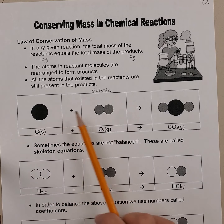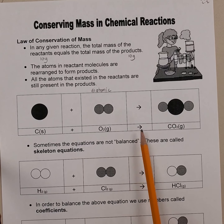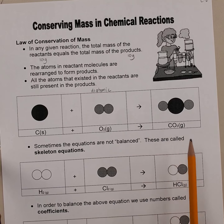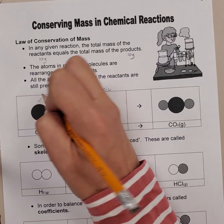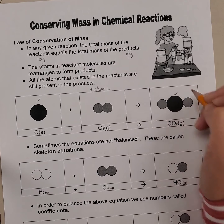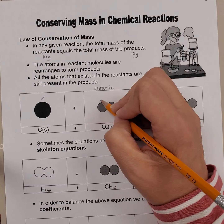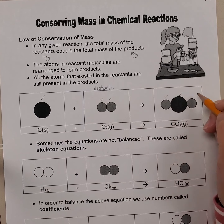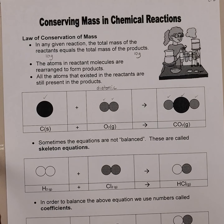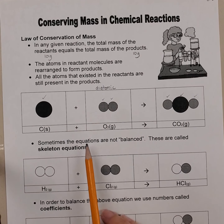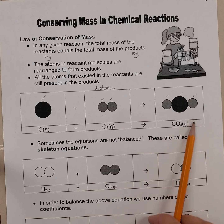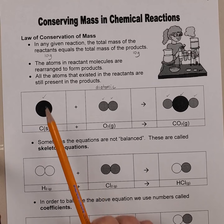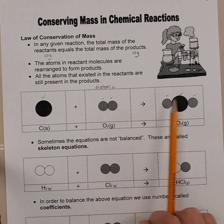These are your reactant molecules. The arrow shows the reaction is proceeding, and what we are left with is carbon dioxide. Looking at the reactant molecules, you've got one carbon on the reactant side and one carbon on the product side. We have two oxygens in the reactants and two oxygens on the product side. So the reactant molecules are rearranged, but the quantity of atoms is conserved.